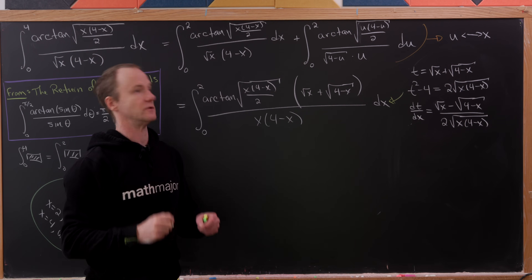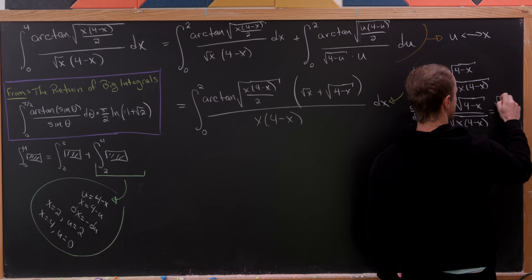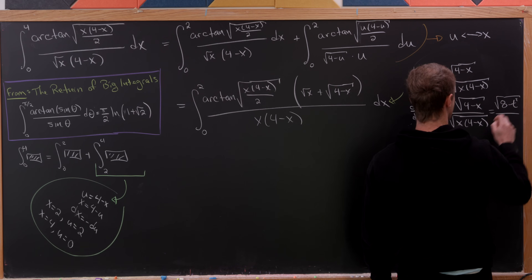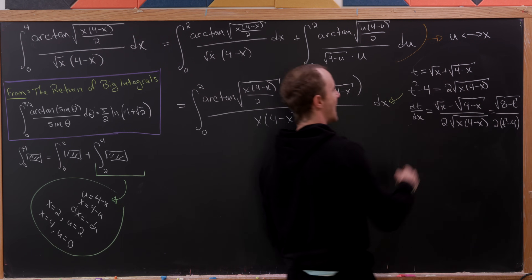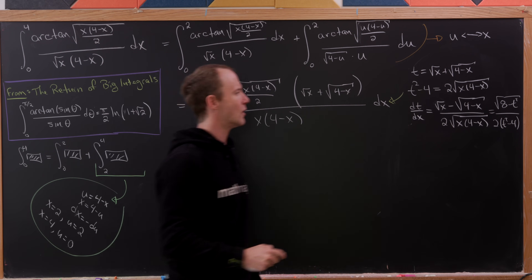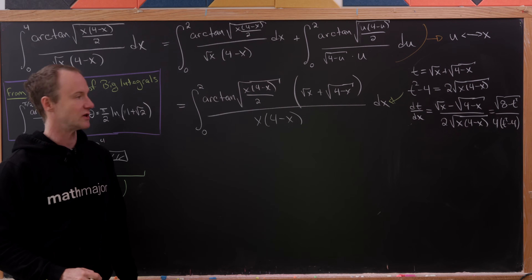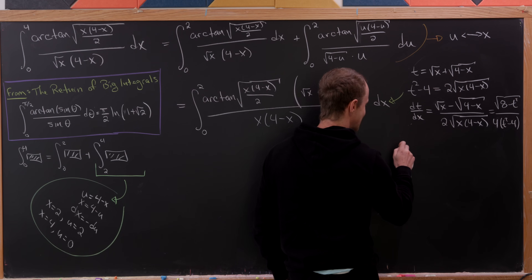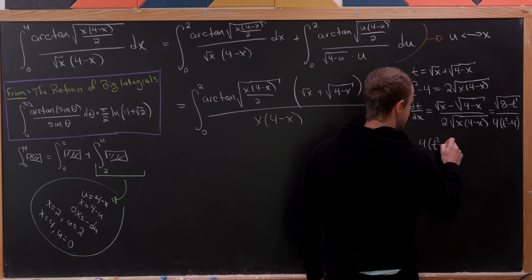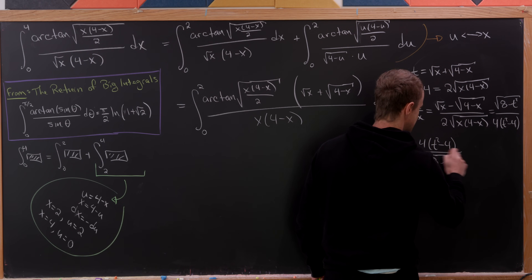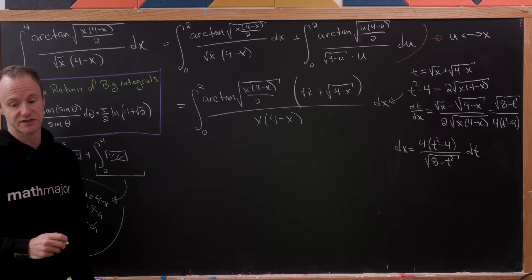We can express the numerator and denominator in terms of t: the numerator becomes √(8 − t²) and the denominator becomes 4(t² − 4). This means dx equals 4(t² − 4) / √(8 − t²) dt, giving us our substitution for the dx term.